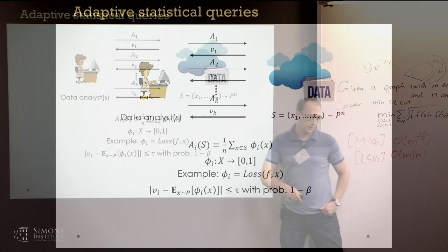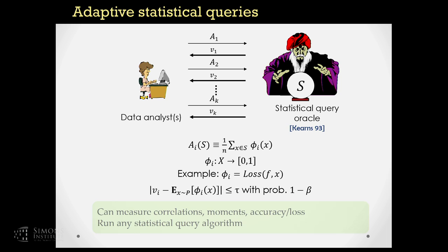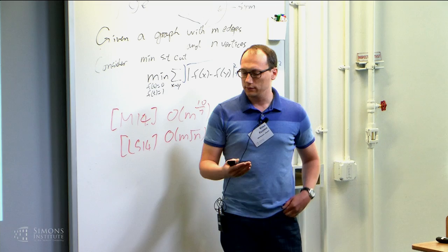It turns out these guarantees have been studied under the name of 'statistical queries' back in 1993 by Kearns. We now know these simple queries can be used to compute many things — for example, measure correlation, moments, accuracy, loss — and in general, run many of the algorithms used in machine learning theory. The importance of this relatively simple setting is that it actually captures many of the issues one encounters when dealing with adaptive data analysis.